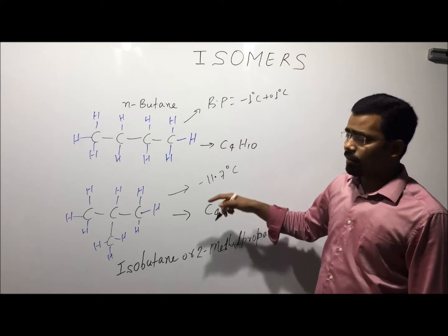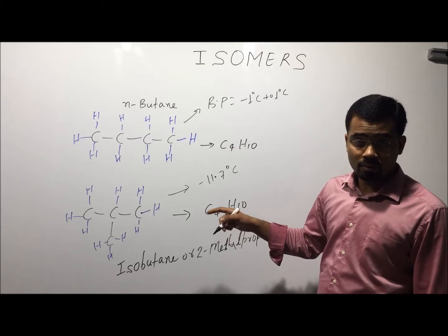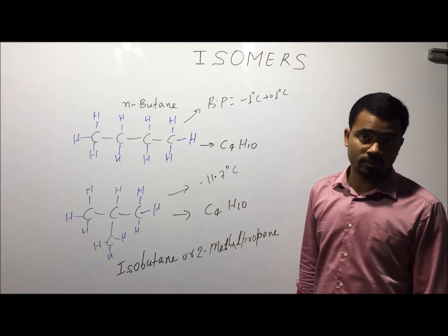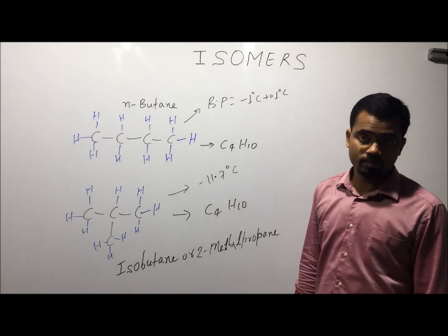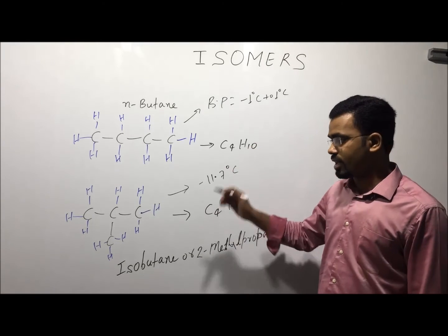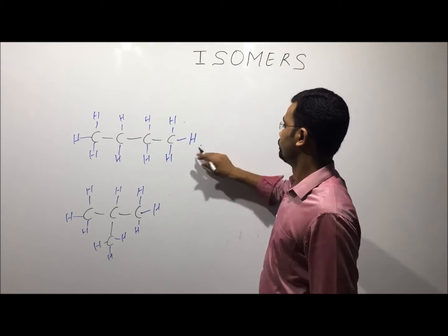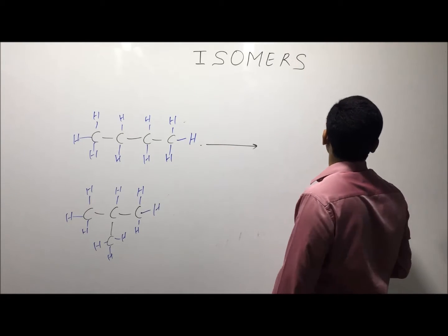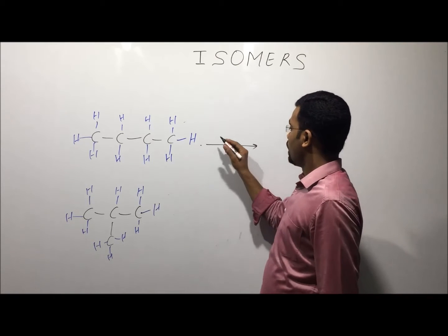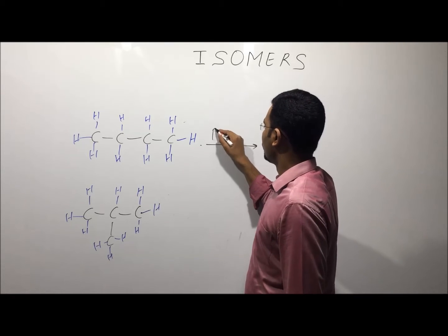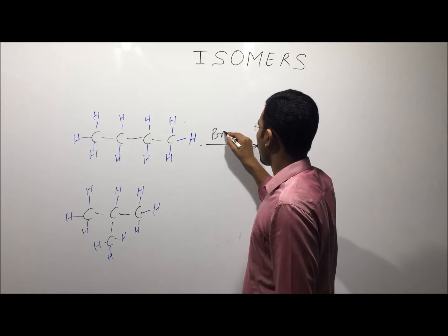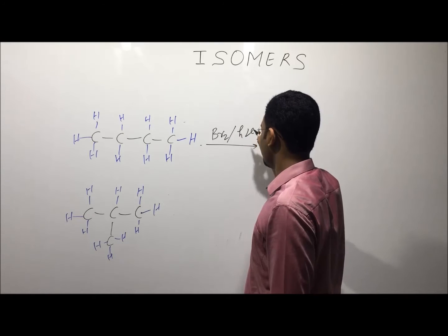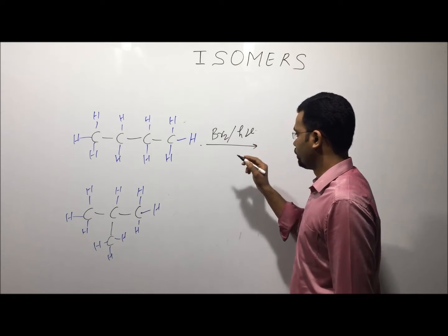Both have different physical properties including different melting point and vapor pressure. They also have different chemical properties. For example, normal butane reacts with bromine in the presence of sunlight (hν).